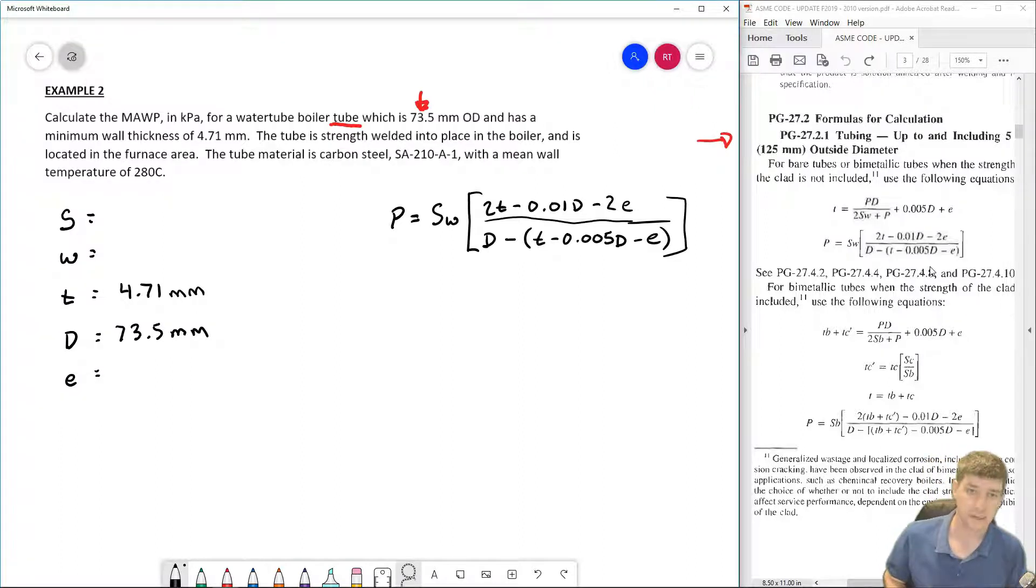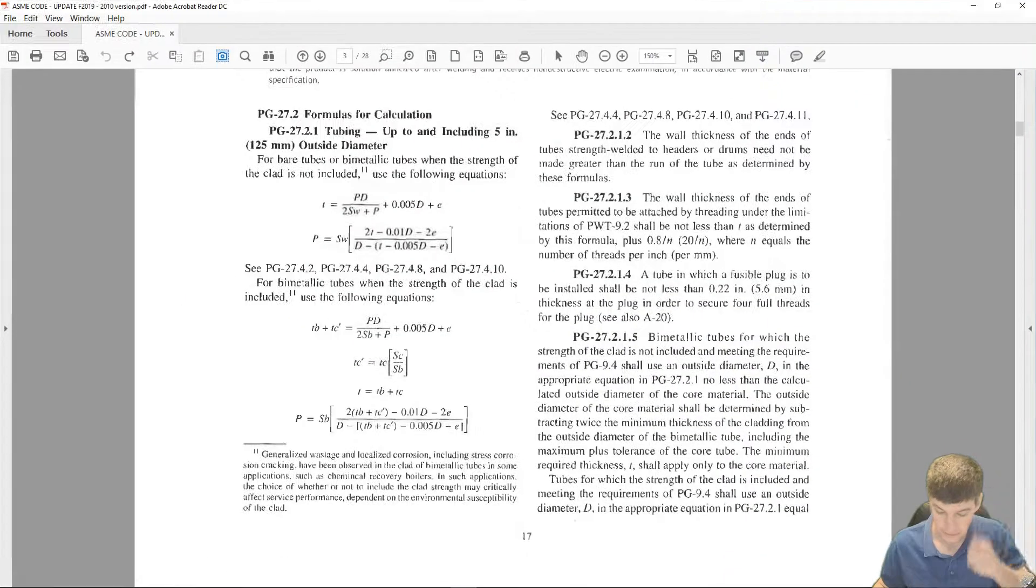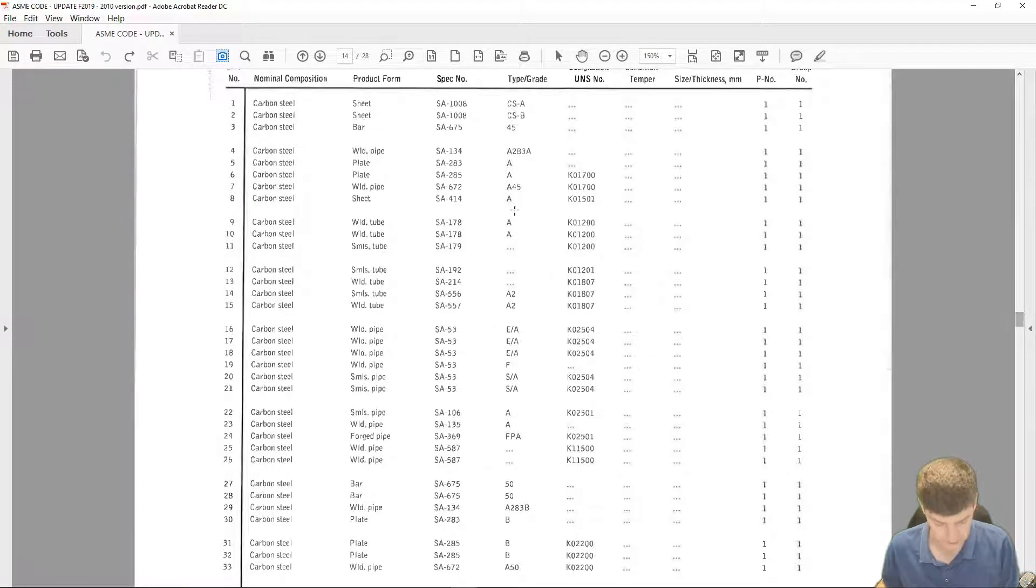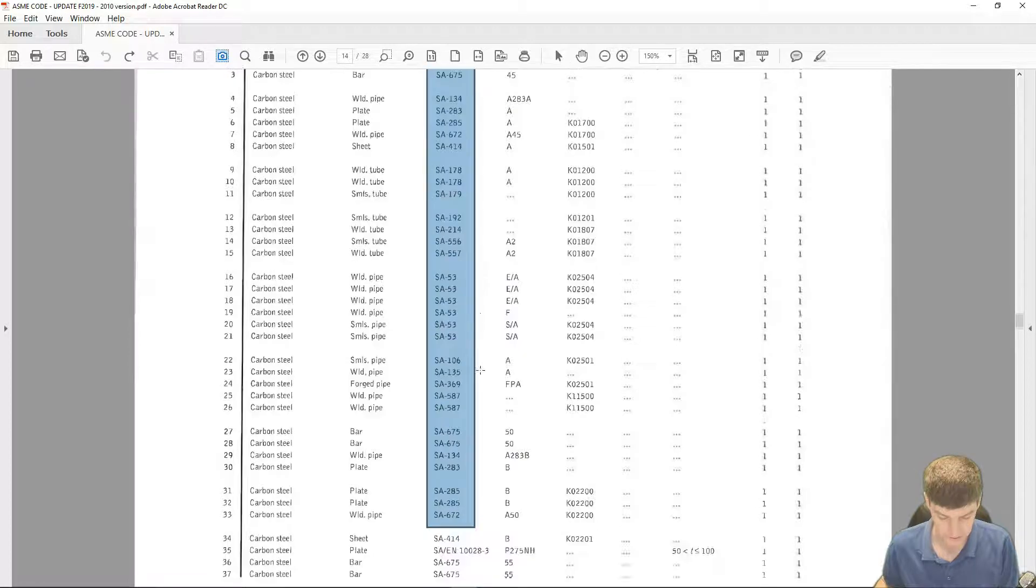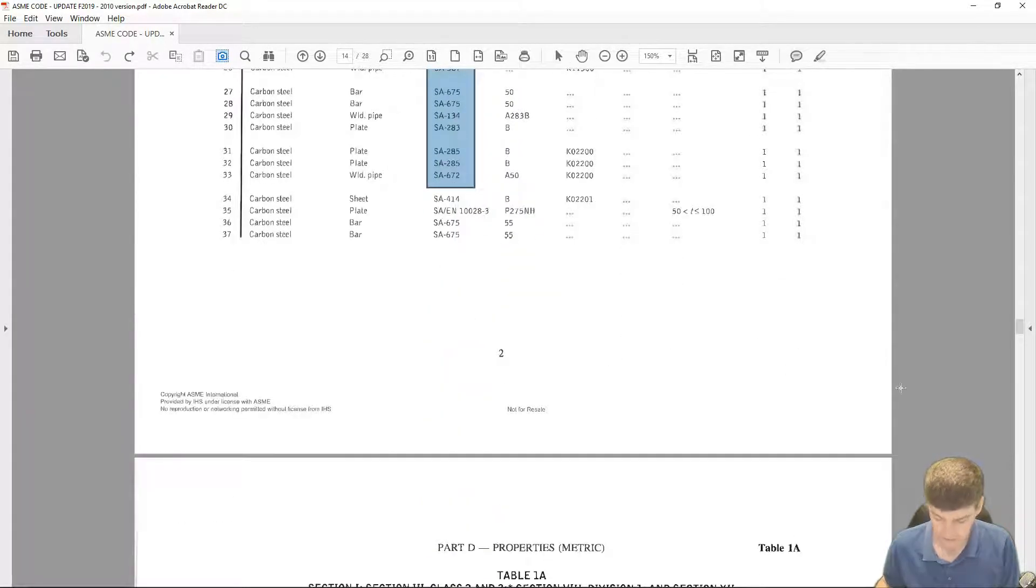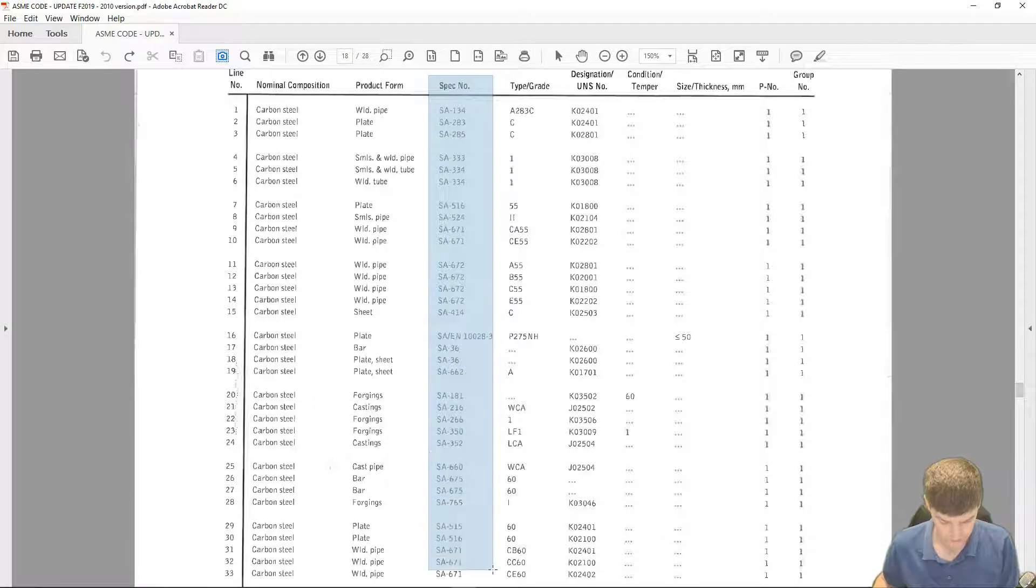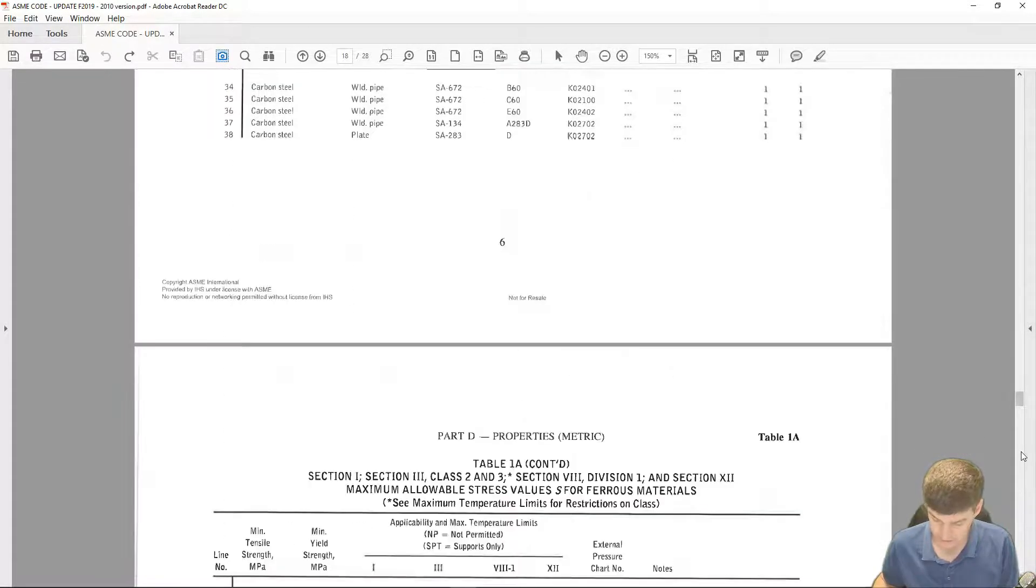So in order to find S, let's make note of a couple things and then we'll go to our table. First thing that I want to make note of is the material - SA210A1 - and I also want to make note of the temperature, 280 degrees. Let's open up our code and we'll go and look through for those materials. So if we scroll down to the material property page, we can start looking through our list. I don't see it on that first page, so I'm going to keep skipping ahead.